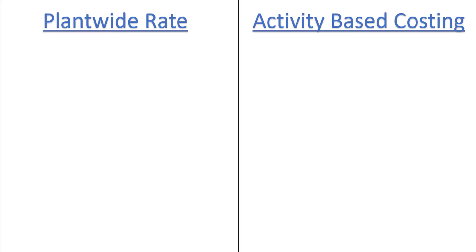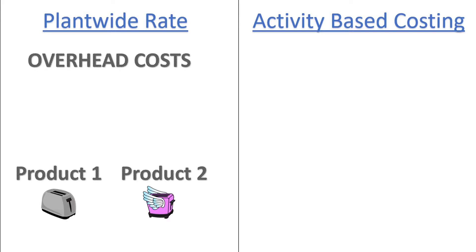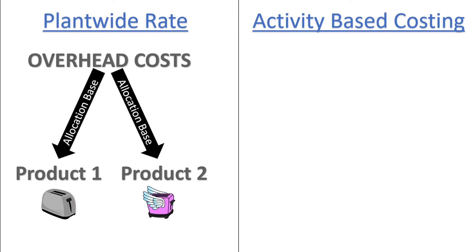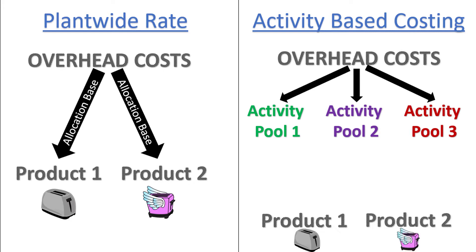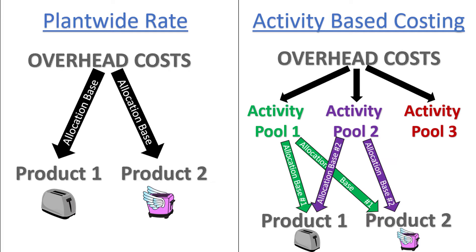Let me explain how activity-based costing is different from the plant-wide overhead rate. The plant-wide overhead rate takes the total overhead costs and assigns them to each product based on an activity the company determines is related to overhead costs, often called an allocation base. We used machine hours as the allocation base in the last video. Activity-based costing first assigns overhead costs into several activity pools — often more than three — and each activity pool allocates its share of overhead to the products based on a different allocation base. So while the plant-wide method uses only one overhead rate, the activity-based costing method uses many different overhead rates.